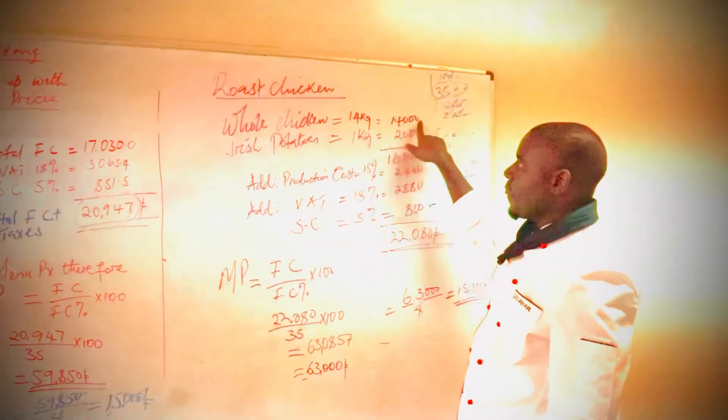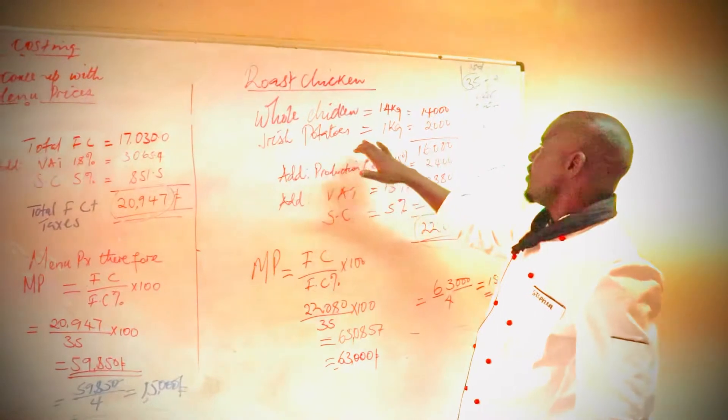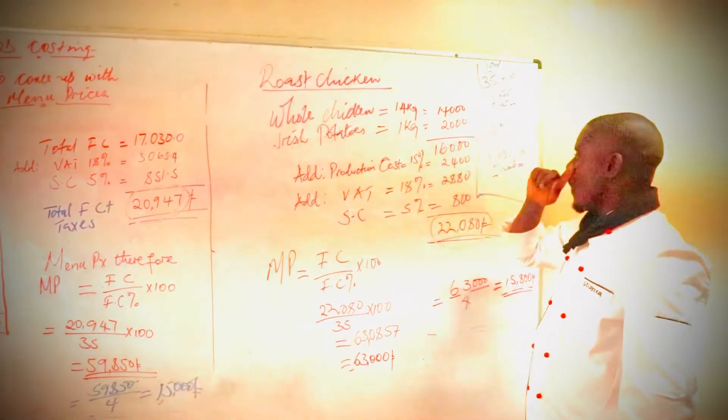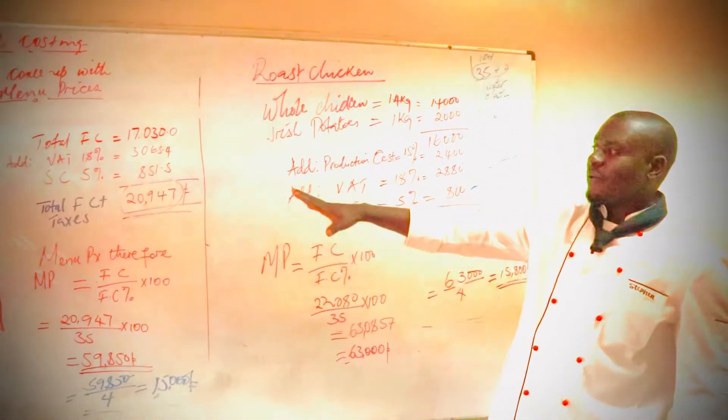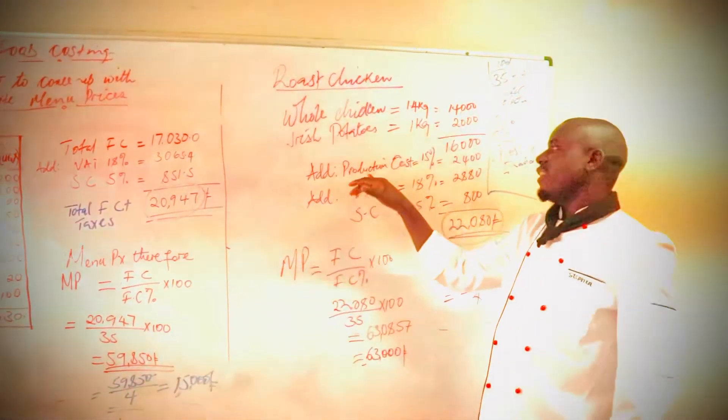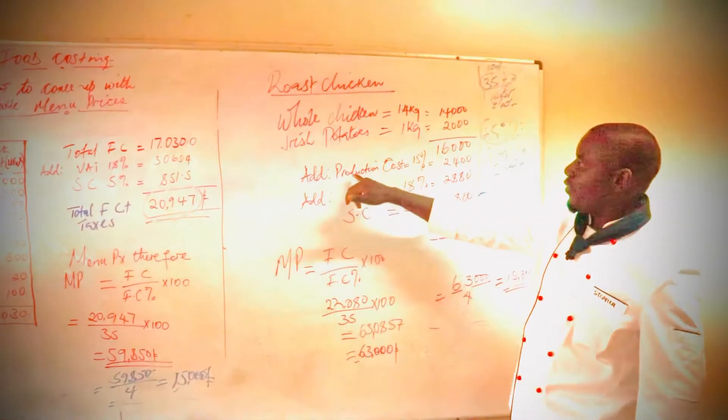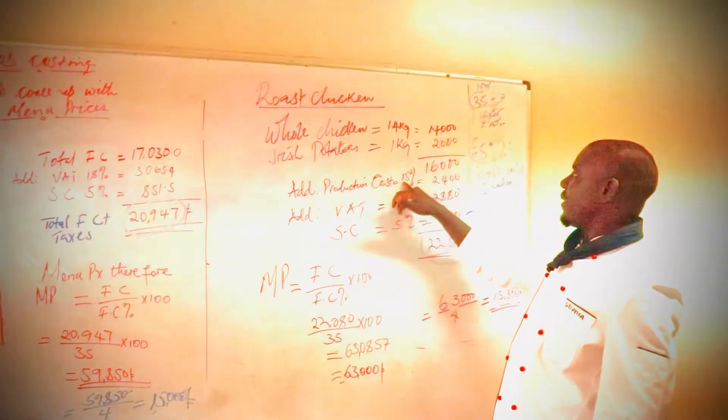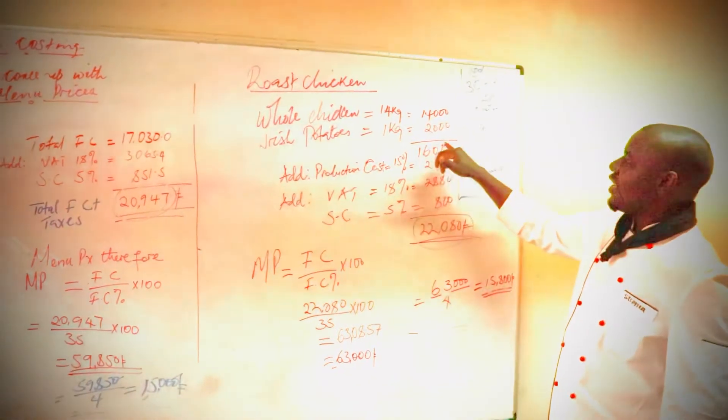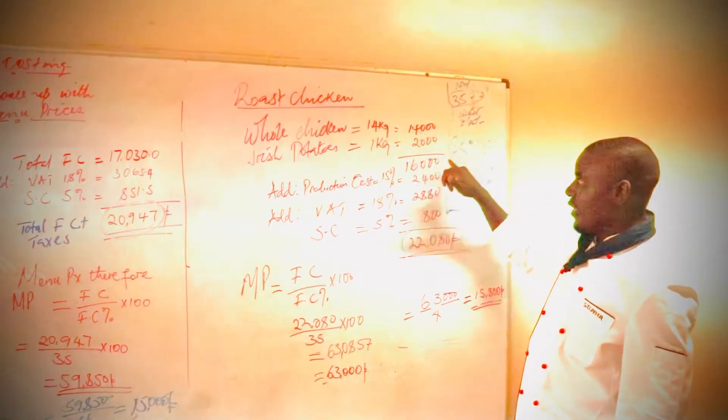Irish potatoes, which is 2,000, then we are adding, instead of adding all the ingredients for production, we are adding the production cost of 15%, production cost of 15% of the 16,000, which is the total here.